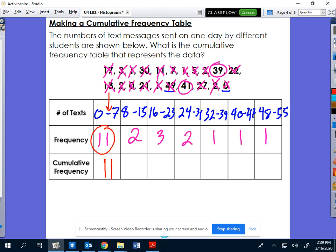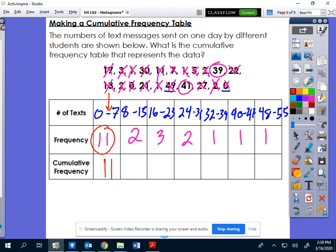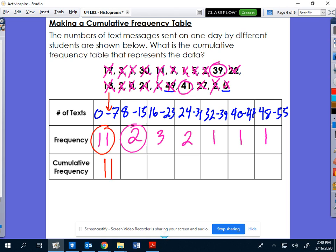But if I go next to my 8 to 15, two people sent 8 to 15 text messages. Your cumulative frequency is now these two people and these two people together, so you're adding those together, which gives me a total of 13.